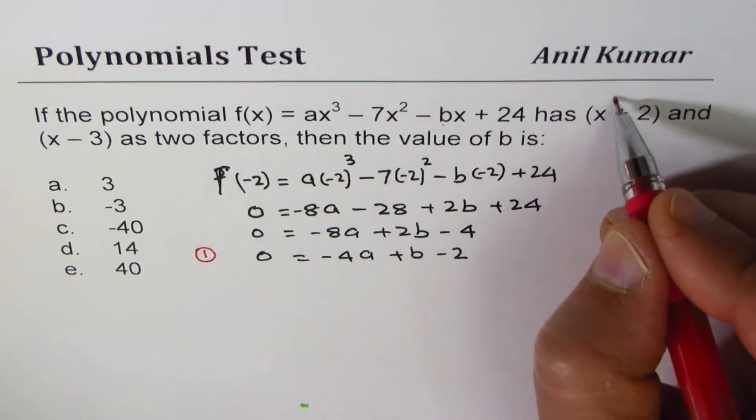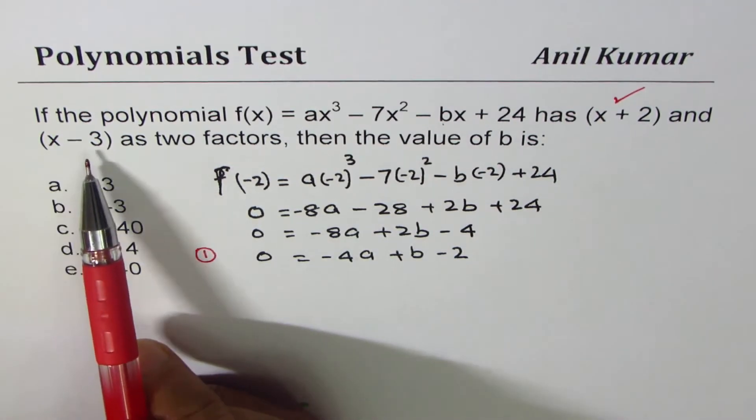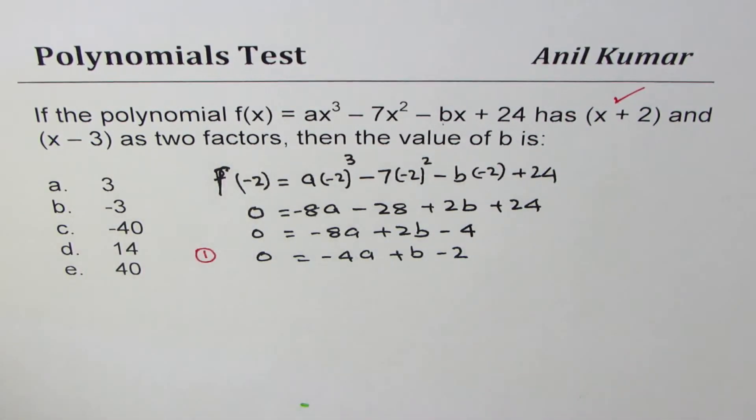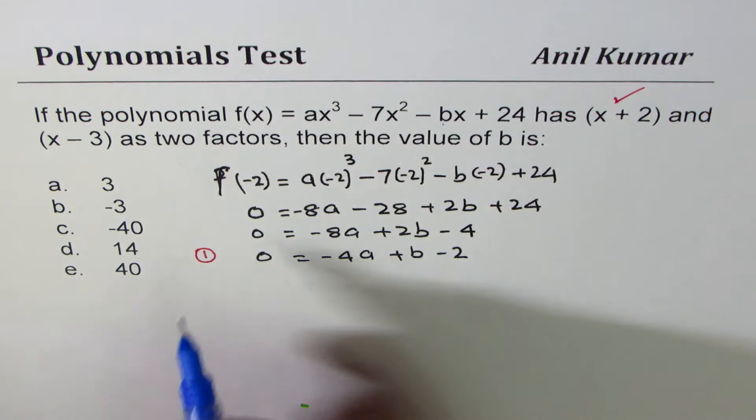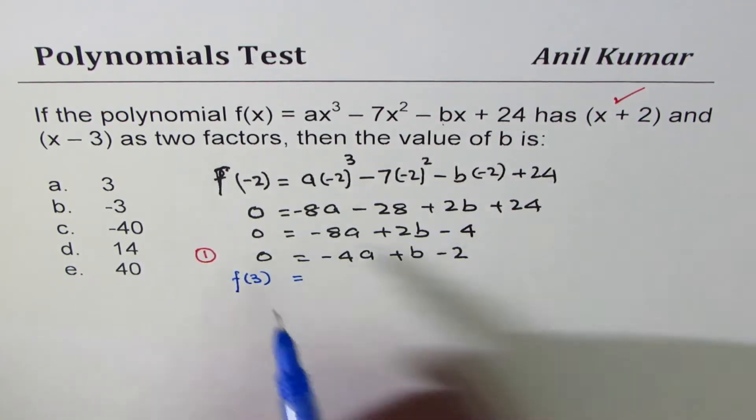We'll call this as our equation number 1. So, this we got using (x + 2) as the factor. Now, as you know, (x - 3) is also a factor, and therefore, the value of the function at 3, x = 3,